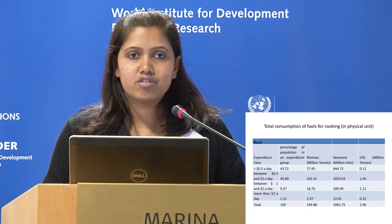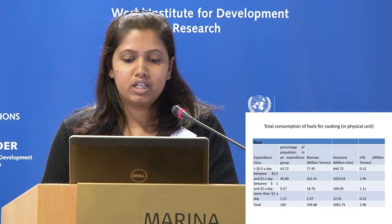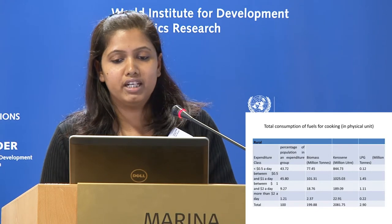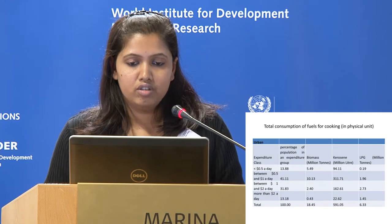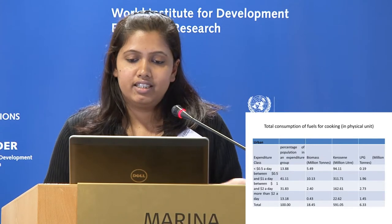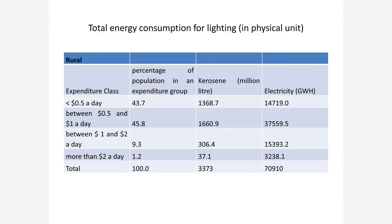This huge amount of biomass, consisting of fuel wood and crop residue from forests, leads to considerable forest degradation. The 2018 million litres of kerosene being used is leading to health hazards and depletion of fossil fuels. Based on the same approach, energy consumption for lighting was also assessed. From these findings, I have done projections of energy poverty going forward.